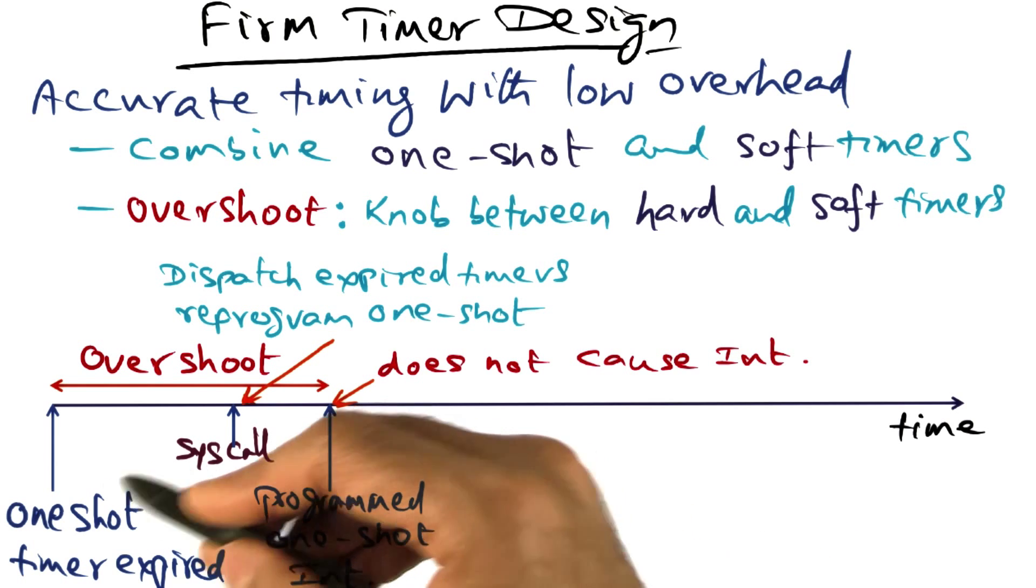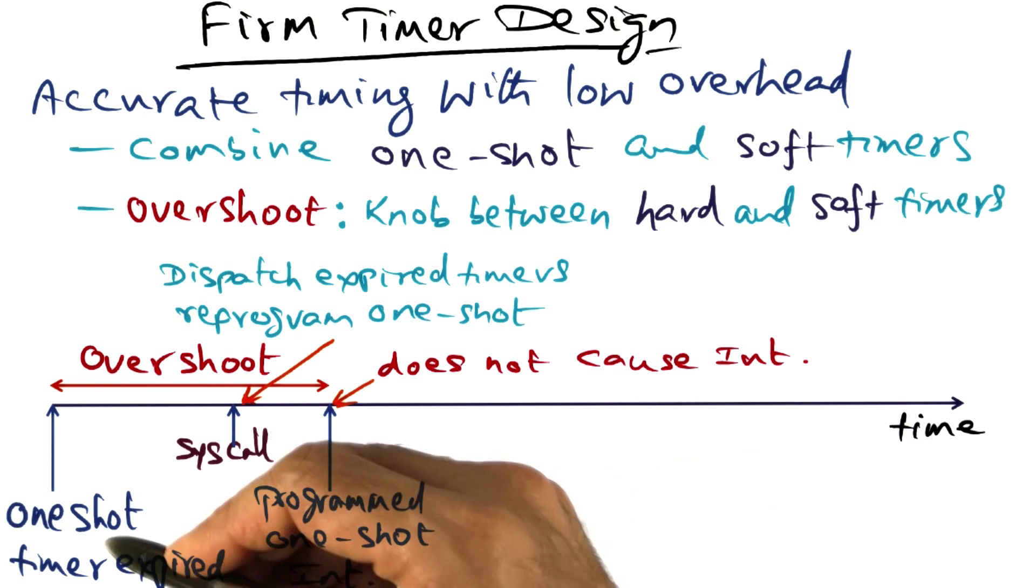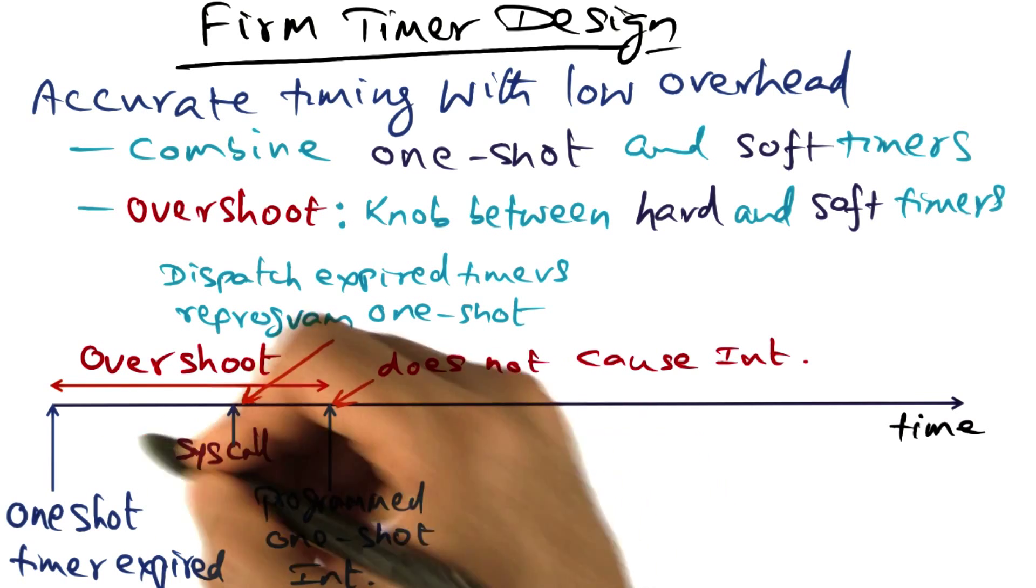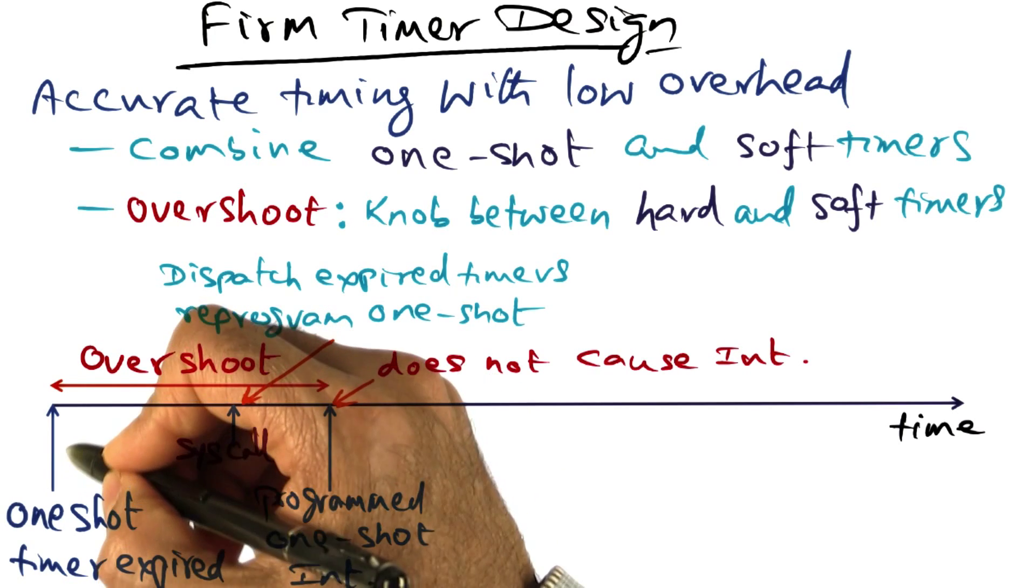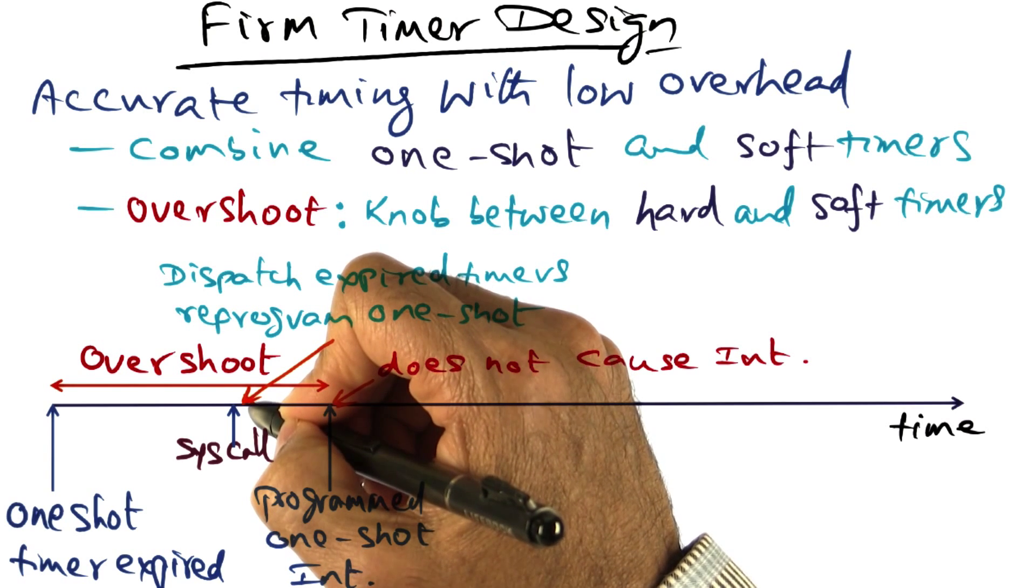It will not cause an interrupt because we've reprogrammed this one shot timer to interrupt at the next one shot timer expiry event. Whatever action that needed to be taken with respect to this particular one shot timer expiration has already been taken at this point.